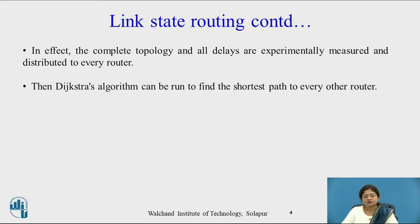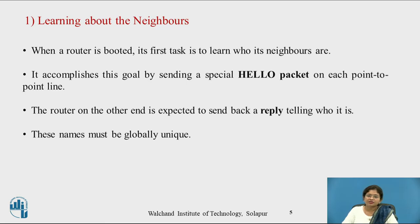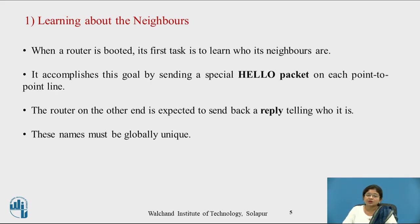Here, the complete topology and all delays are experimentally measured and distributed to every router. The Dijkstra algorithm can then be run to find the shortest path to every other router. The first step is learning about the neighbors. When a router is booted, its first task is to learn who its neighbors are. It accomplishes this by sending a special hello packet on each point-to-point link.